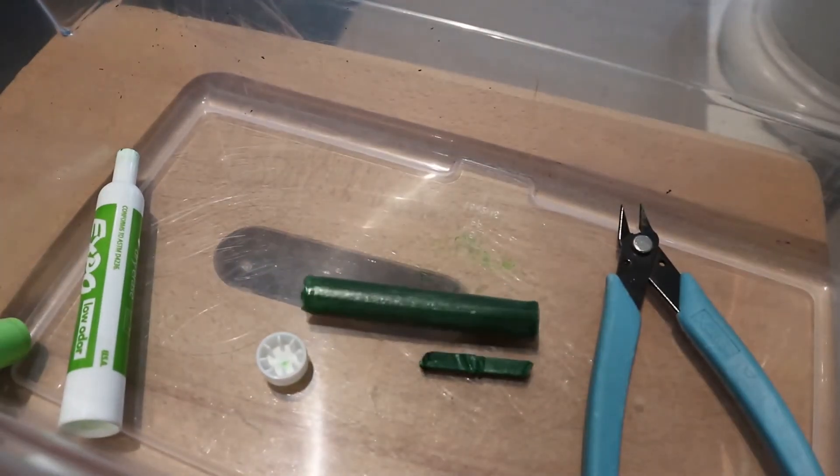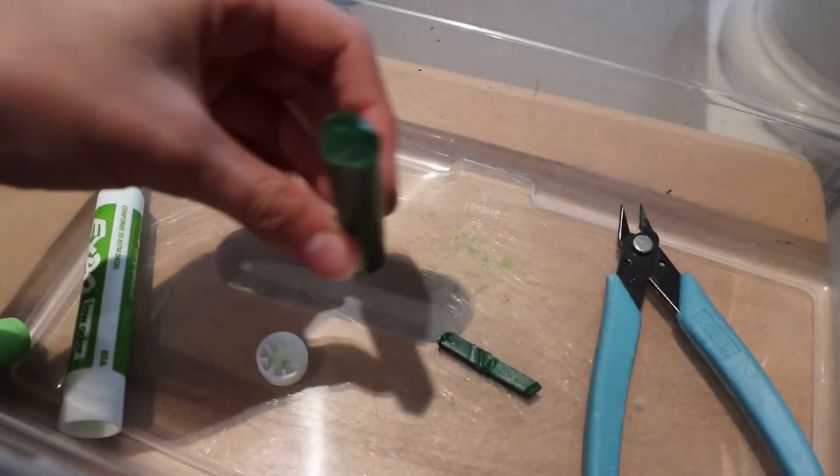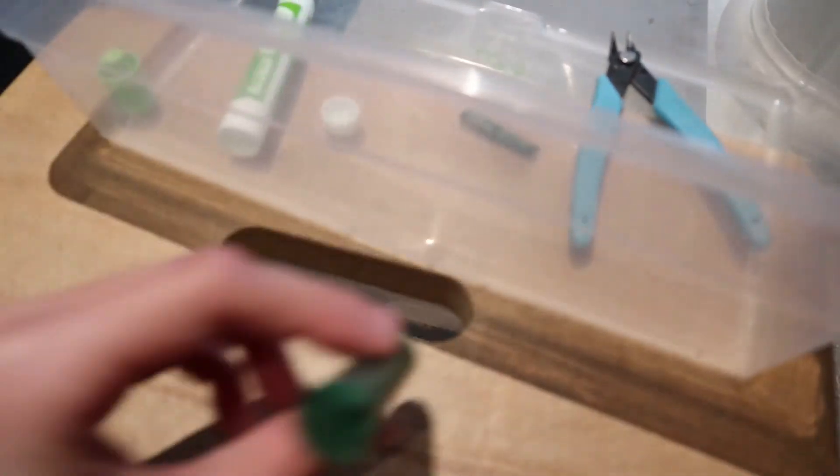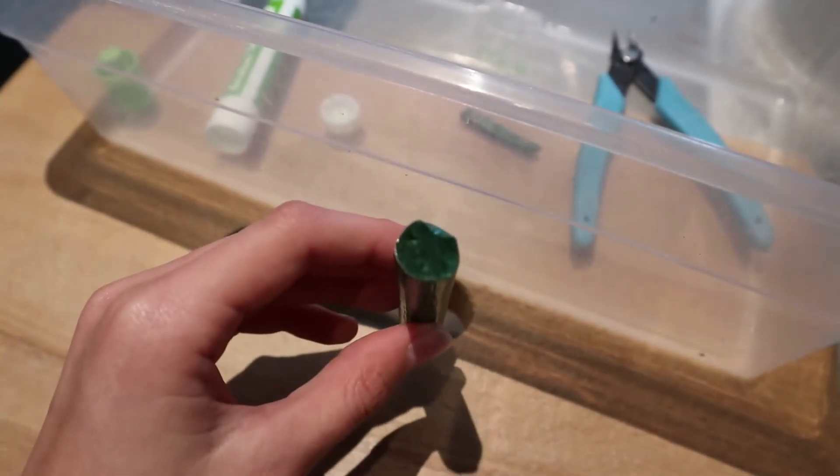This is what is inside of a standard dry erase marker. And I will give one last close up look at this weird end.